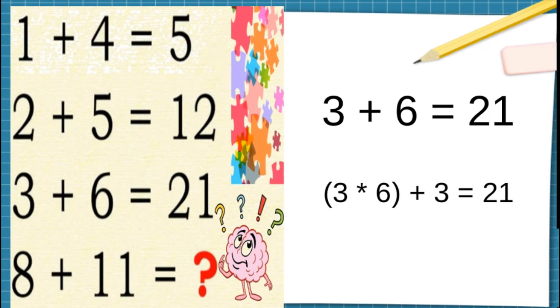So 3 × 6 is 18. 18 plus 3 is 19, 20, 21. So this is how we will solve this puzzle.